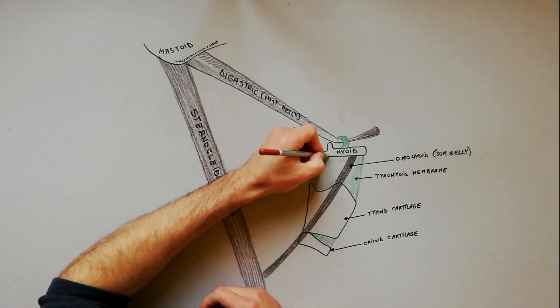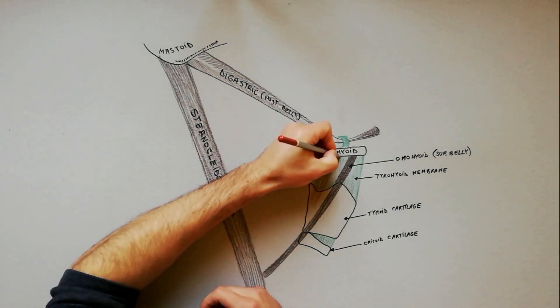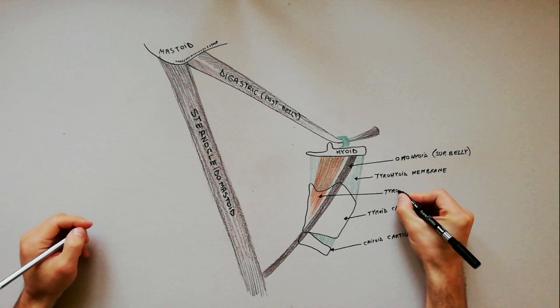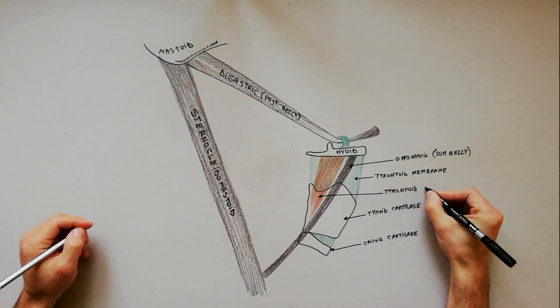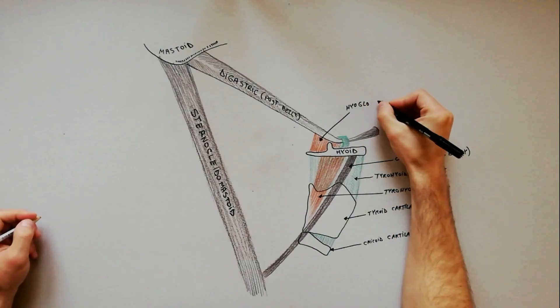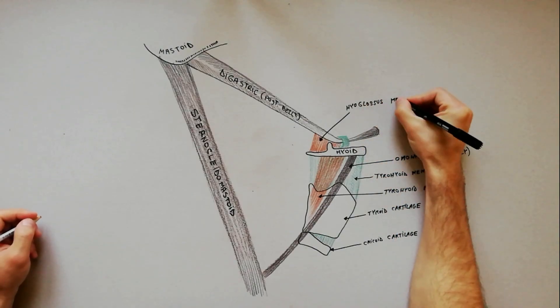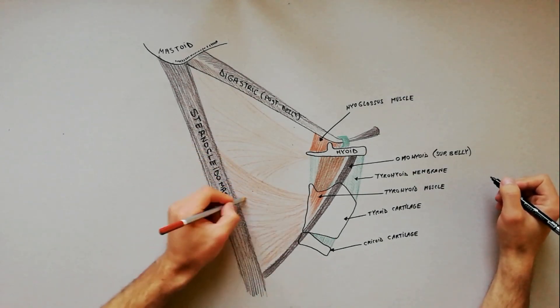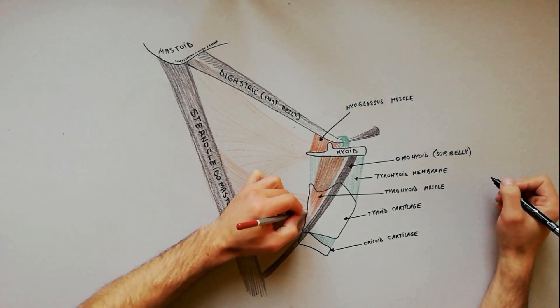Its floor is formed by parts of the thyrohyoid muscle, hyoglossus, and constrictors pharyngis medius and inferior.